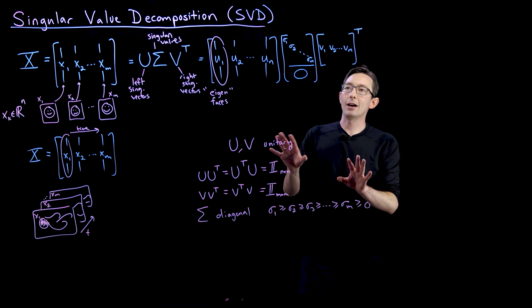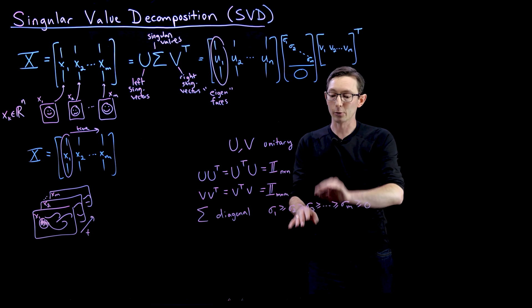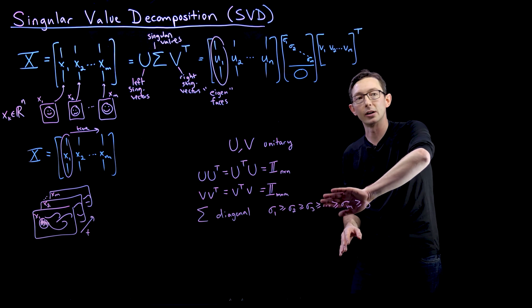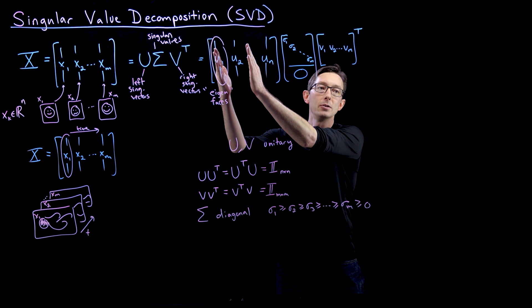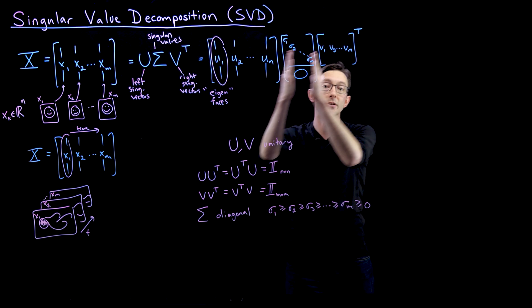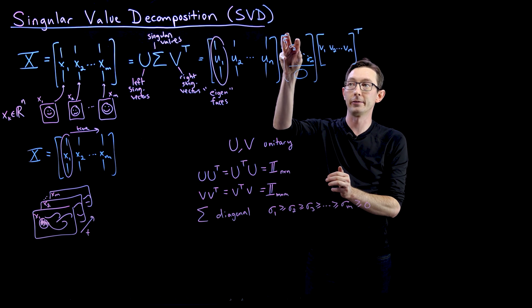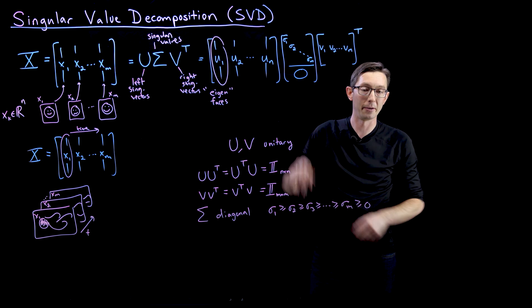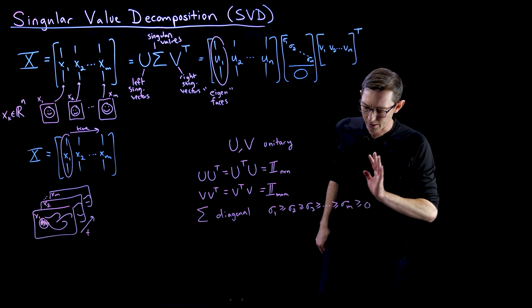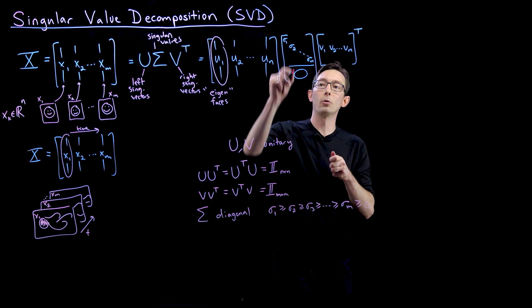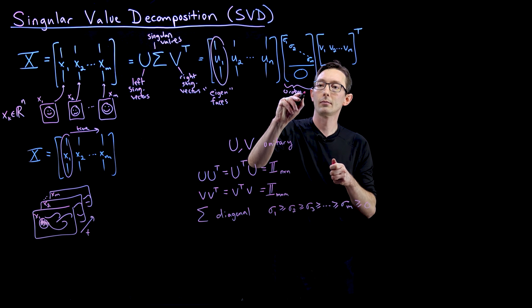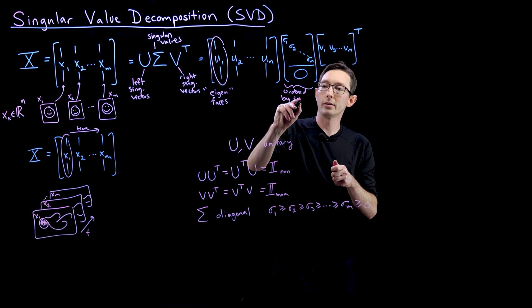We call V the right singular vectors, and we call this diagonal matrix sigma a matrix of singular values. So each of these sigmas is a singular value of X corresponding to the singular vector U and the singular vector V. And this is going to allow us at some point if some of these sigmas are really really small we're going to be able to ignore them to chop them off and approximate the matrix X only in terms of the first few dominant columns of U and columns of V and the first dominant singular value sigma. So I'll talk all about that later. But this is kind of an important concept is that these are ordered by importance.